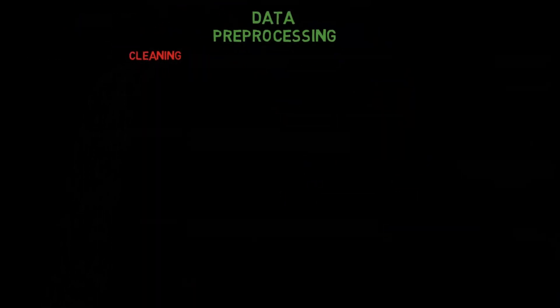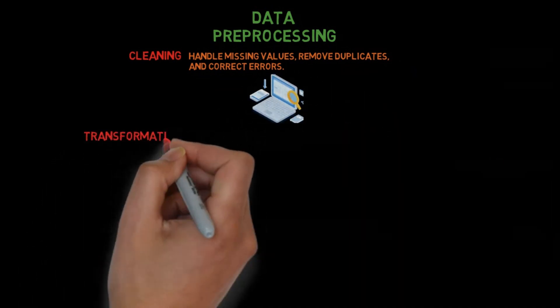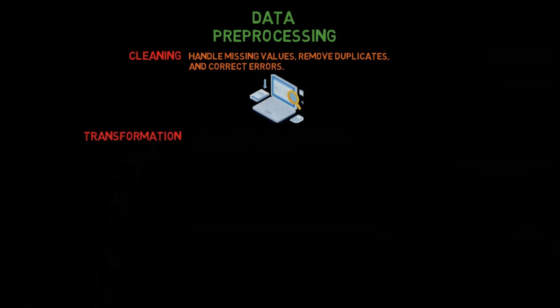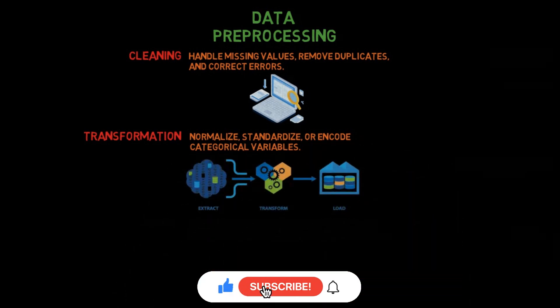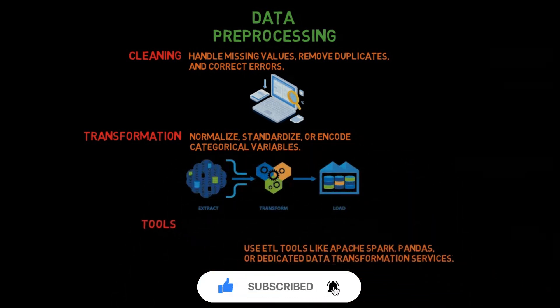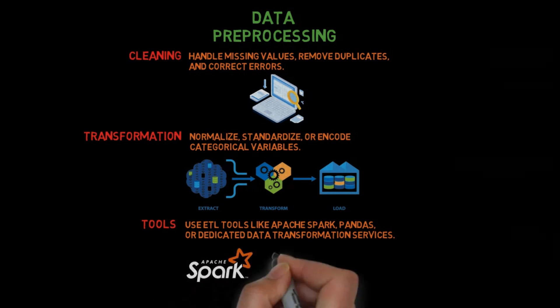Step 2: Data pre-processing. Cleaning: Handle missing values, remove duplicates, and correct errors. Transformation: Normalize, standardize, or encode categorical variables. Tools: Use ETL tools like Apache Spark, Pandas for Python, or dedicated data transformation services.